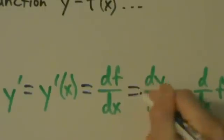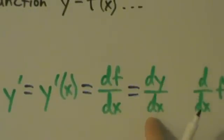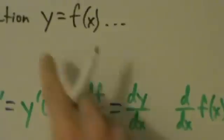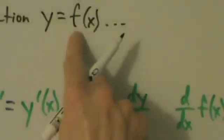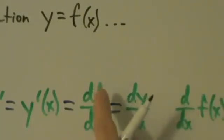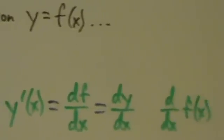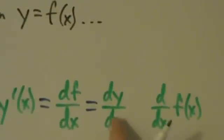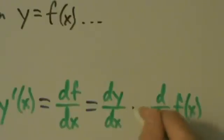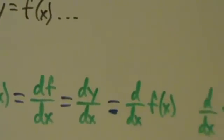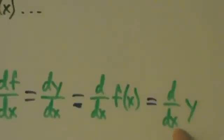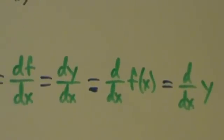So df dx is the same thing as dy dx, because the function is y equals f of x. So if this were g instead of f, then this would be dg dx, this would be g primed of x, et cetera. Continuing: dy dx is the same thing as d dx of f of x, and you could also say d dx of y. That's just d dx, not d over dx.